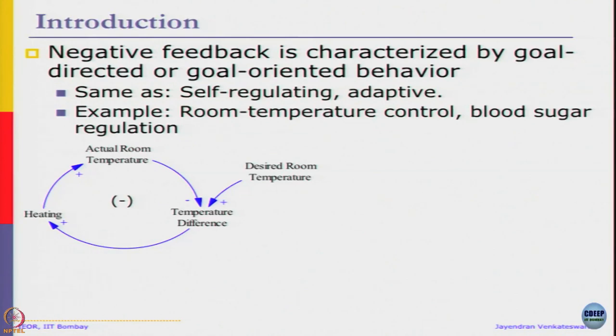CLD representation of that would be this kind of example where we are looking at current state of the system. This actual room temperature represents a current state. We know the desired room temperature we fix in the AC, get the difference, and according to that heating or cooling has to happen.